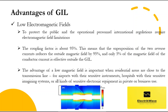In case of limitation of the magnetic field in the surroundings, this solidly grounded GIL can fulfill even very low magnetic field requirements. With a current rating of 3,150 ampere, within a few meters distance, a magnetic field strength of one micro Tesla can be reached, as required in some countries. The advantage of a low magnetic field is important when residential areas are close to the transmission line, for airports with their sensitive instruments, hospitals with their sensitive imaging systems, or all kinds of sensitive electronic equipment in private or business use. In Italy, electromagnetic field requirements for new installations go down to magnetic flux values of only 0.2 micro Tesla, and the GIL can reach such low values over a distance of a few meters.